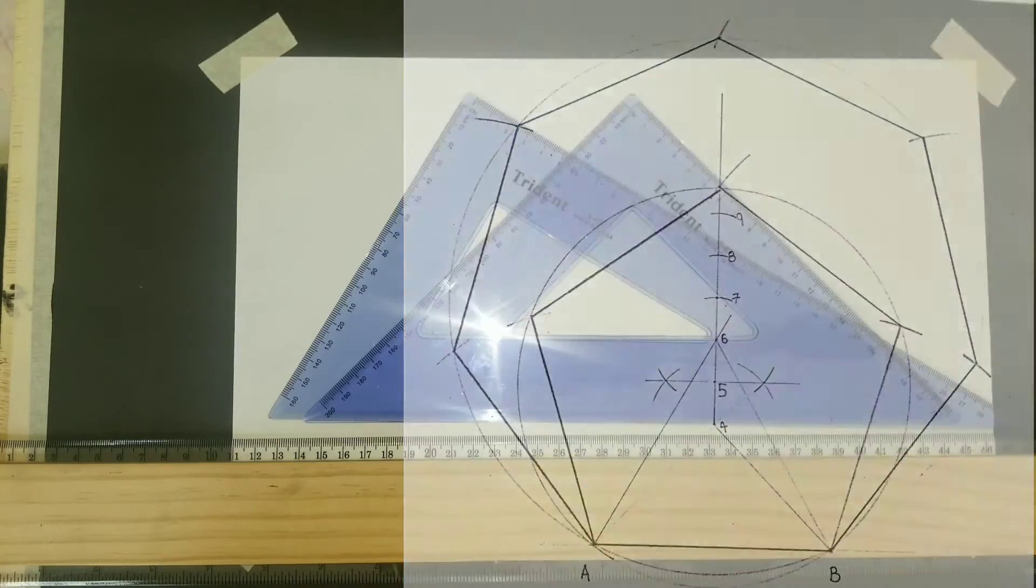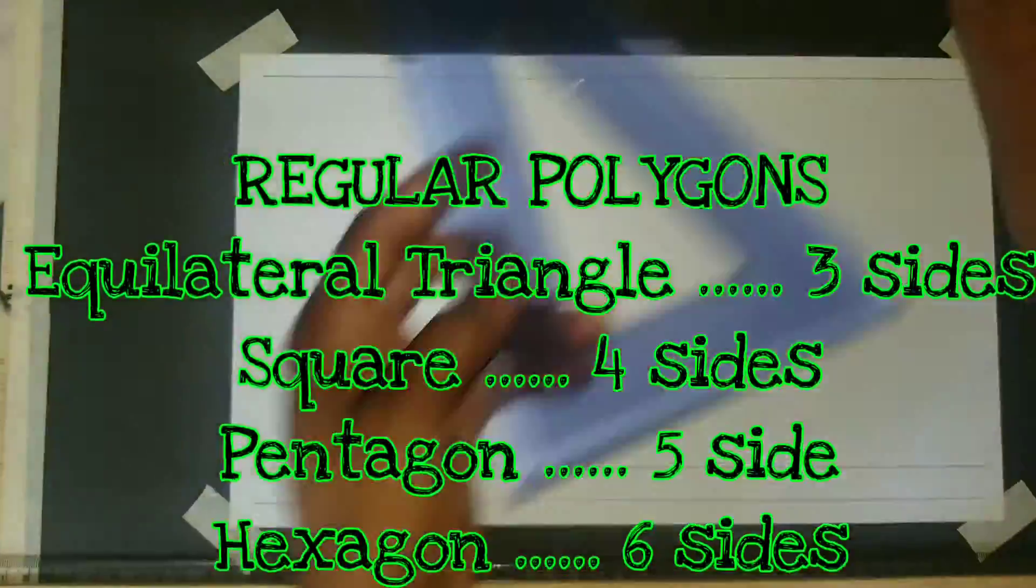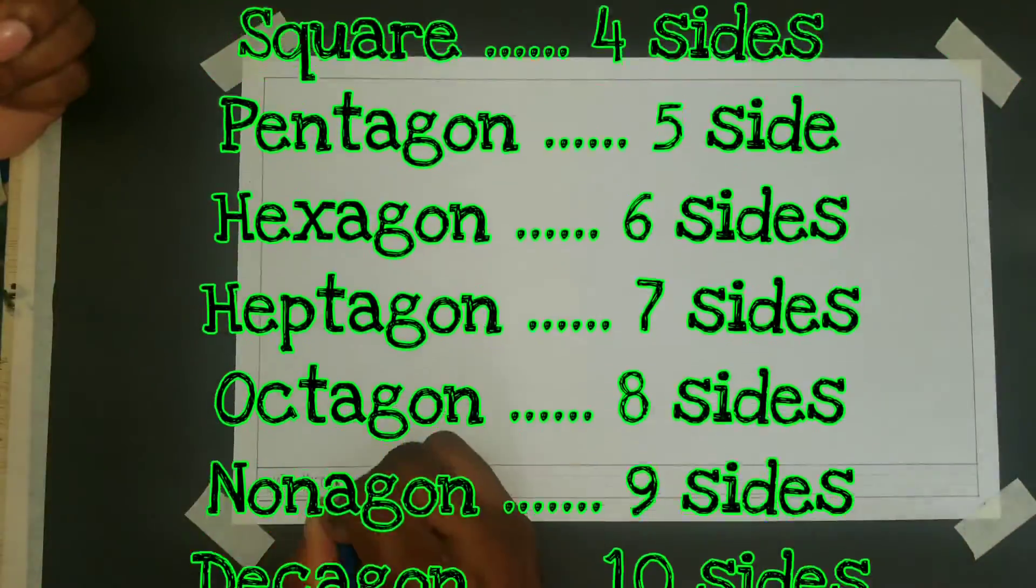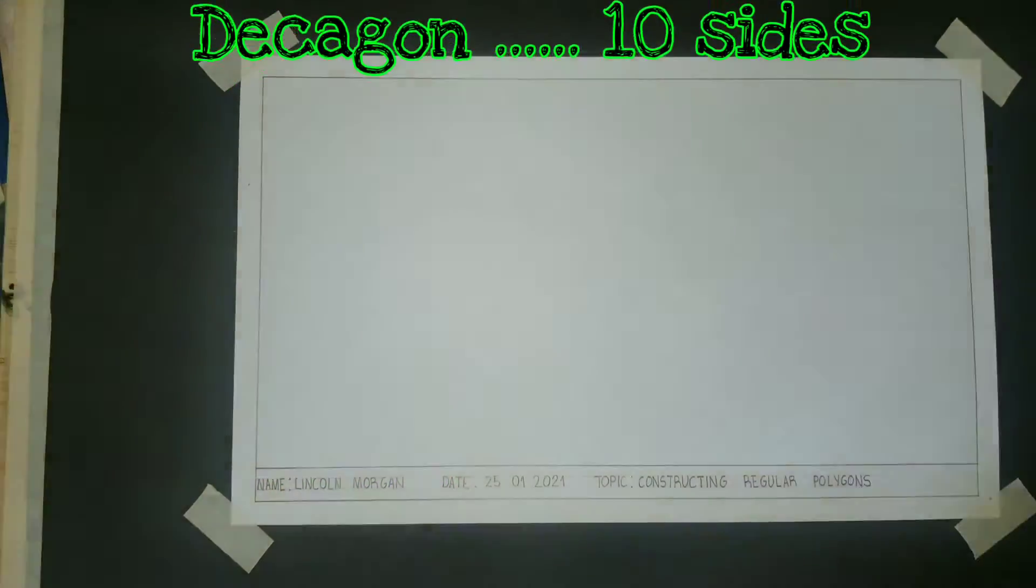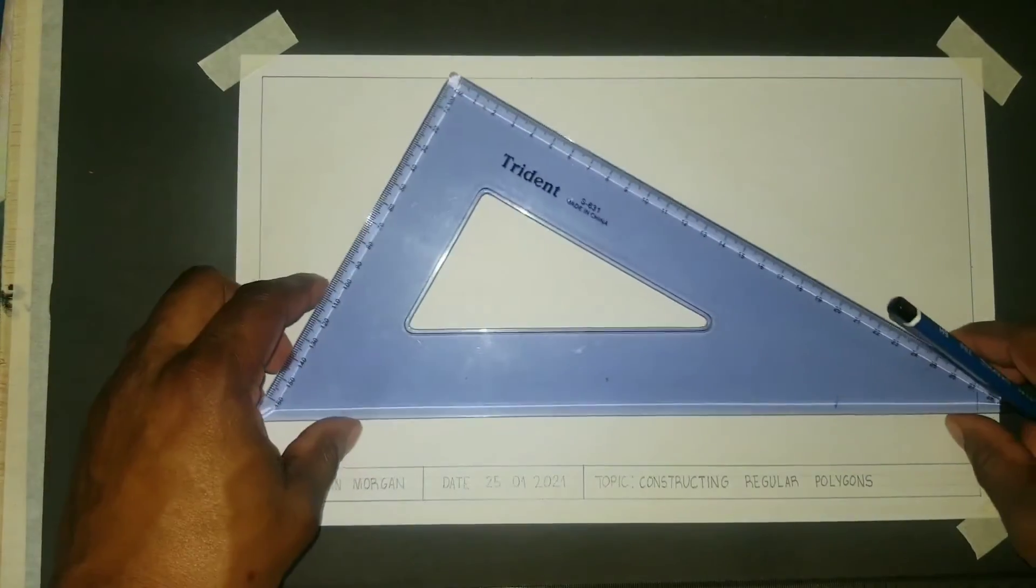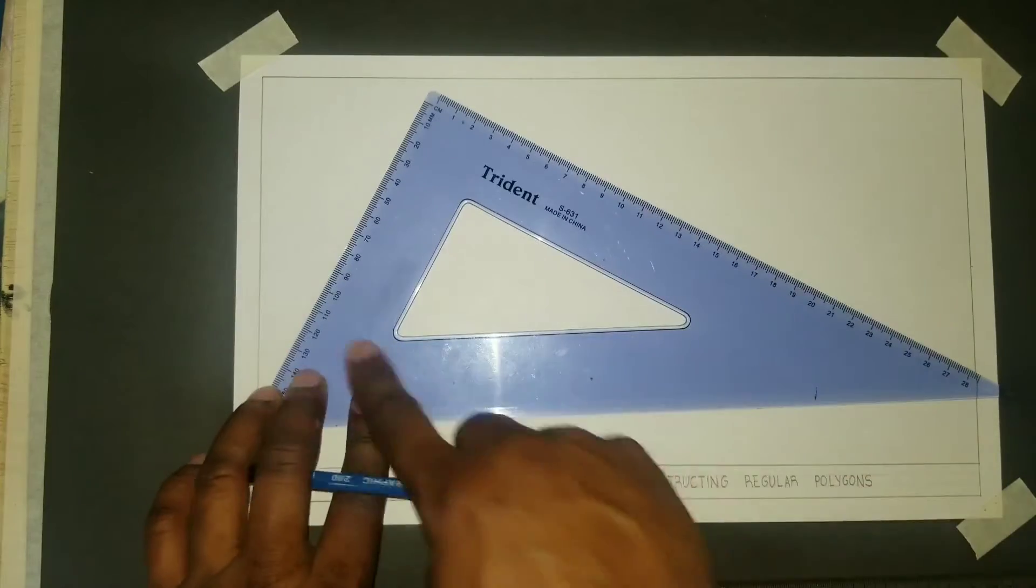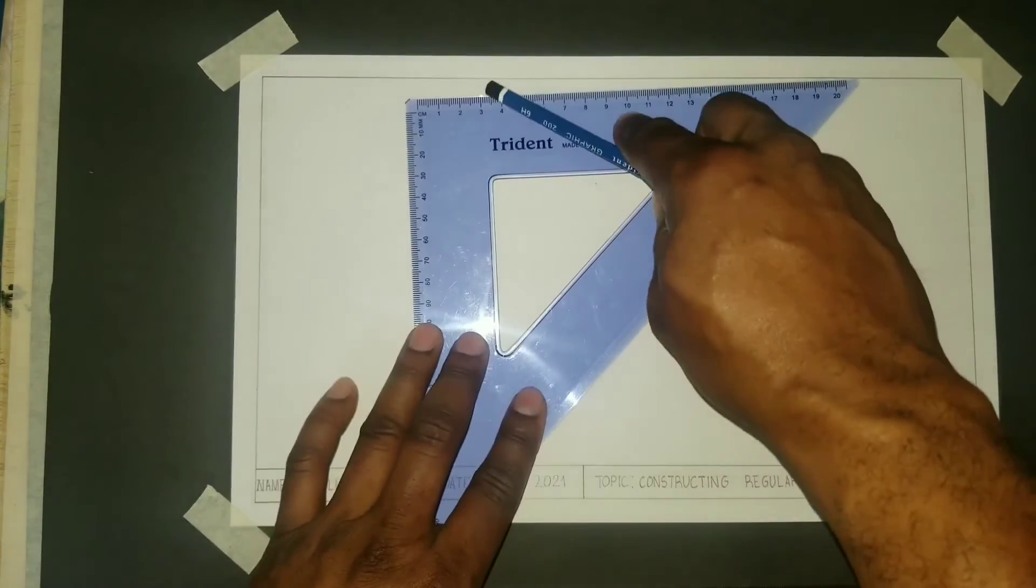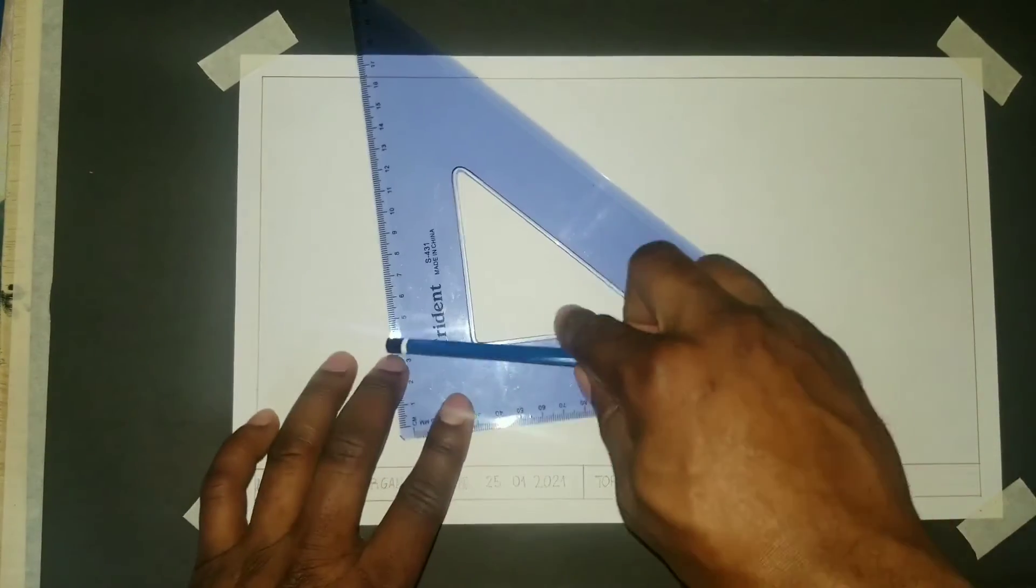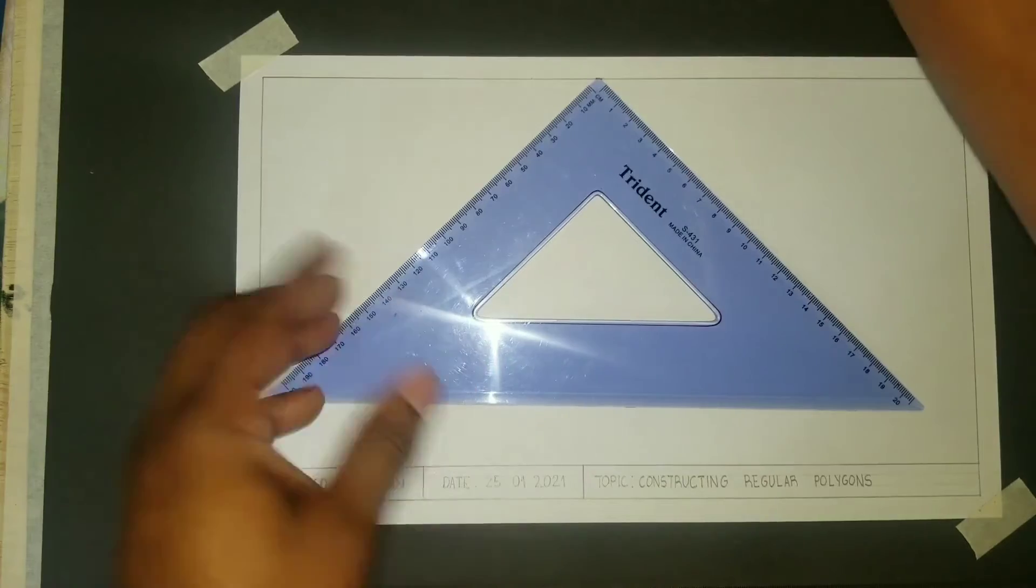I will now border my paper. For this video we will use our 60-30 set square and also our 45 set square. This angle measures 45 degrees, so this is called the 45 set square, and we commonly call this one the 60-30.